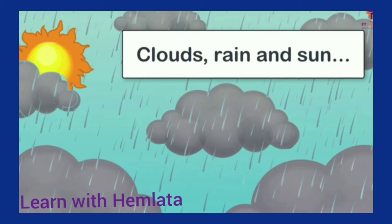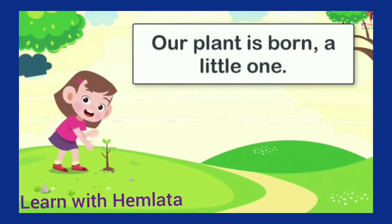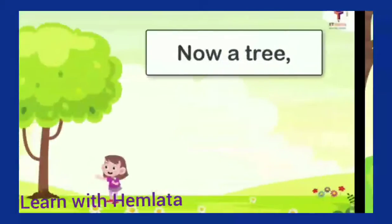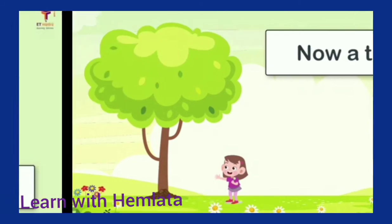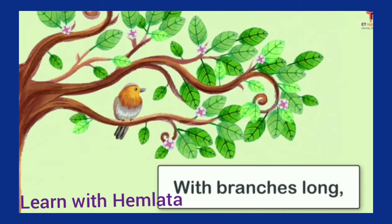Clouds, rain, and sun — three of them together — and our plant is born. Which is the very seed, and from where it is a little plant, and now it has converted into a big tree with long branches.